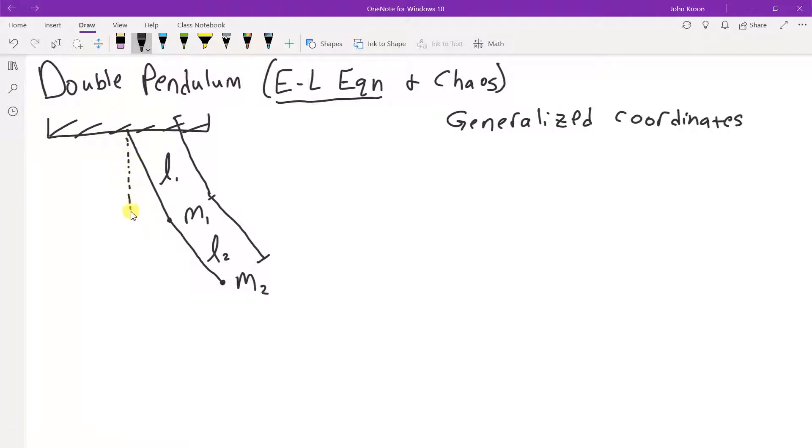And we oftentimes will make use of those coordinate systems. But a generalized coordinate, I see one of them right here. If you drop a vertical down here and call this angle theta 1, that is the angle which locates mass 1.